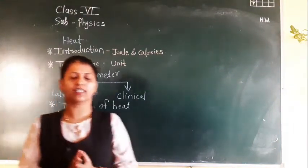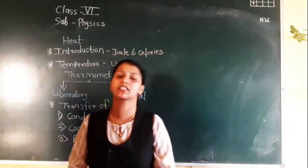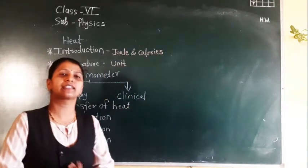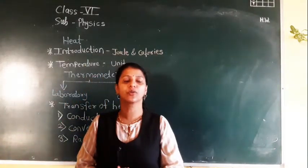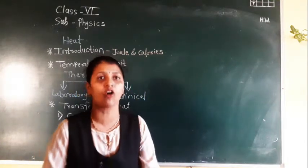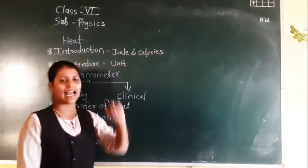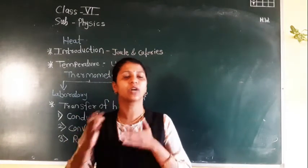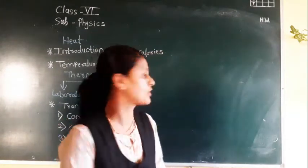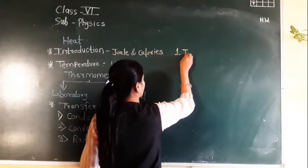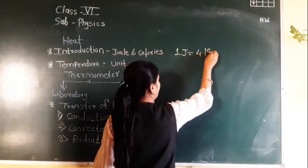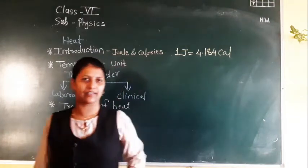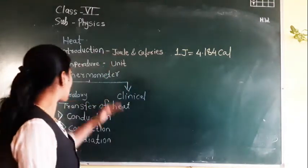First, introduction. Heat is nothing but a form of energy. The SI unit, that is the accepted international unit of heat, is joule or calorie. If you want to convert 1 joule into calorie, the formula is: 1 joule is equal to 4.184 calories. So this is about the introduction.